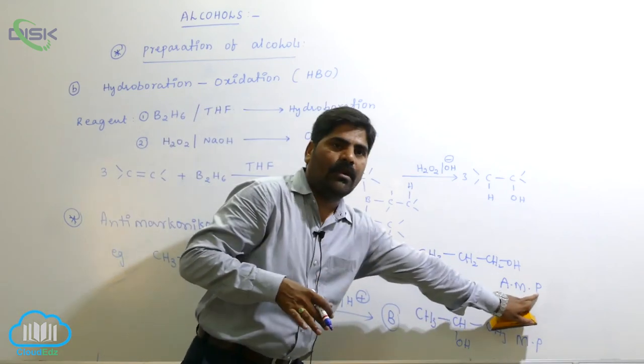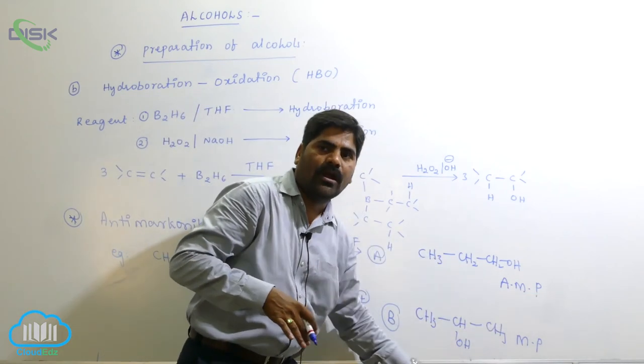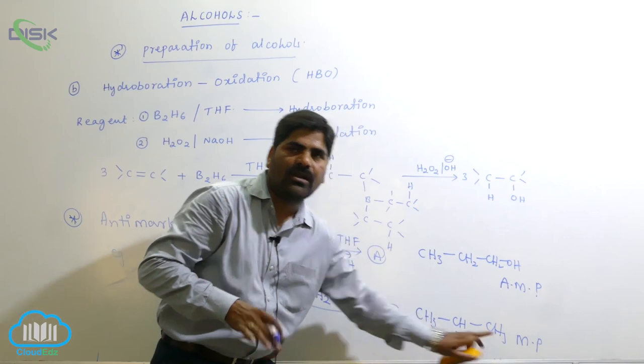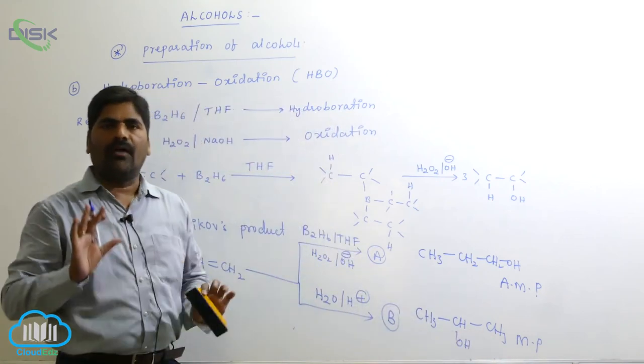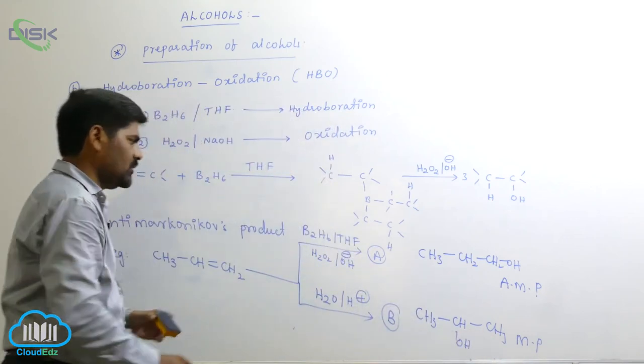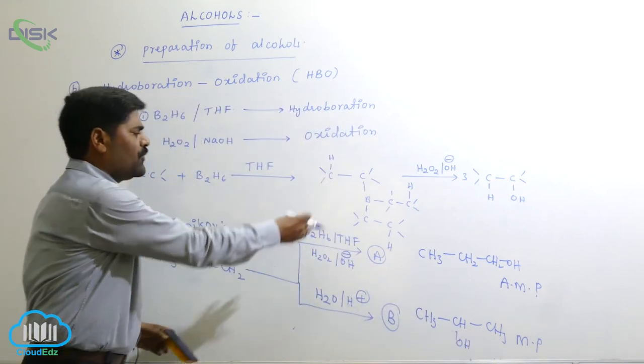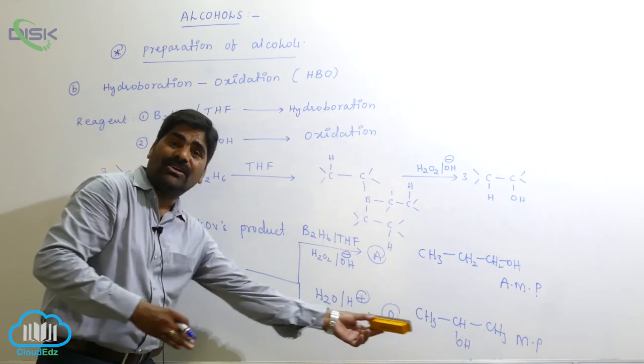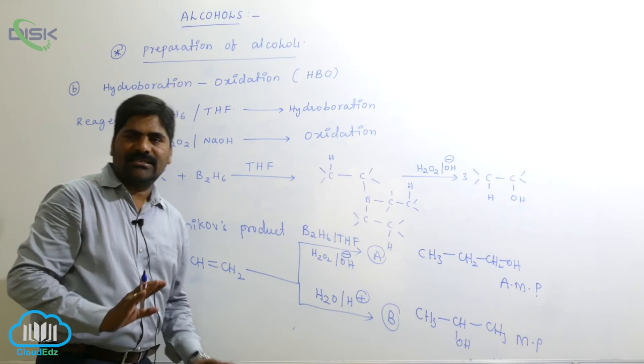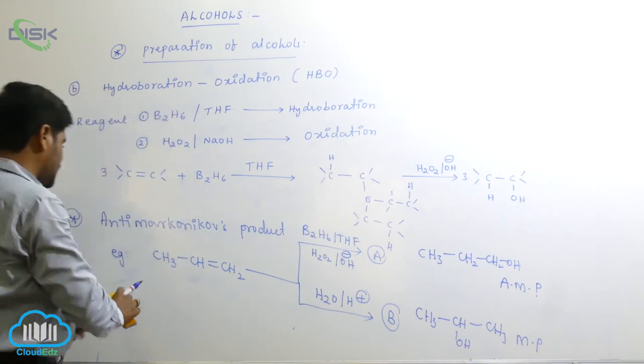AMP means Anti-Markovnikov product; MP means Markovnikov product. This type of question is generally asked in entrance examinations.